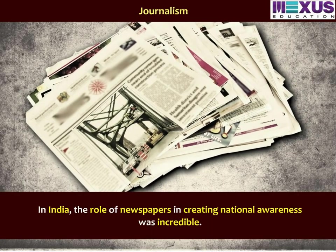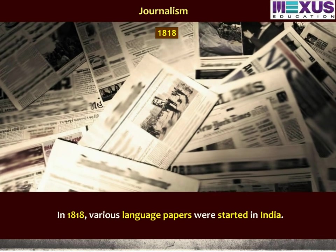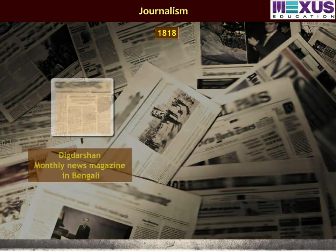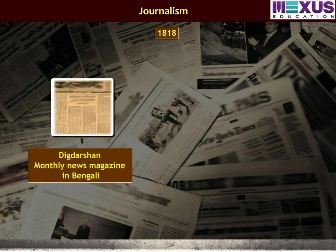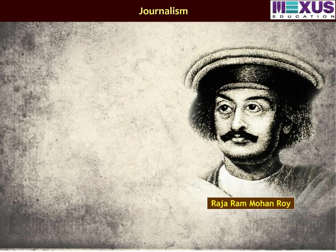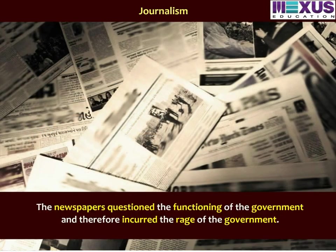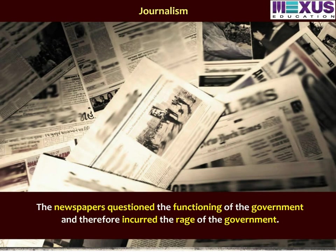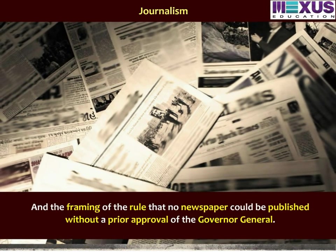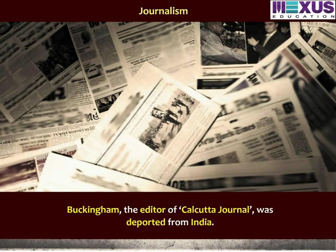In India, the role of newspapers in creating national awareness was incredible. In the year 1818, various language papers were started in India. Some examples include Dig Darshan, a monthly magazine in Bengali, and Samachar Darpan, a weekly news magazine in Bengali. Raja Ram Mohan Roy was one of the pioneers in publishing the first weekly Bengali newspaper called Samwad Kaumudi. The newspapers questioned the functioning of the government, incurring its rage and leading to a rule that no newspaper could be published without prior approval of the governor-general. One such newspaper was the Calcutta Journal, whose editor Buckingham was deported from India.